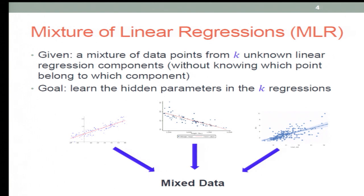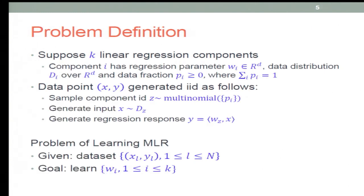Let's come to the problem setup. Suppose you are given some data points from k unknown components. Each component has both design and response. For each data, you receive a design and response from some linear regression model. You have k components, and for each data you know the design and response, but you don't know which component it belongs to. Your goal is to learn the underlying parameters for each of the components.